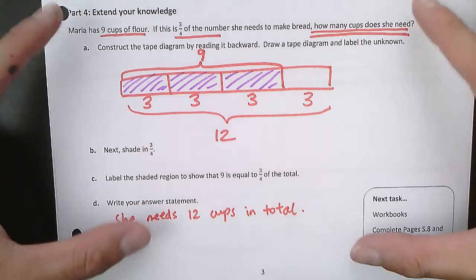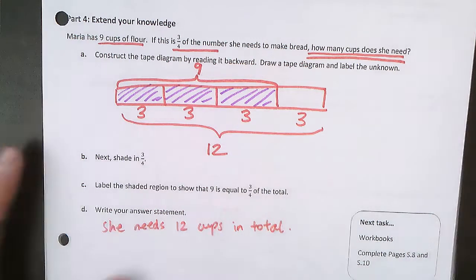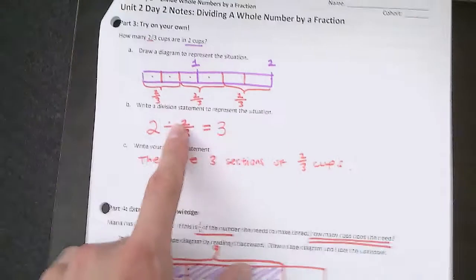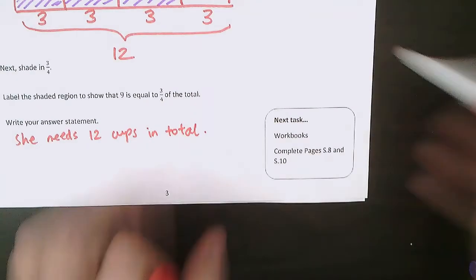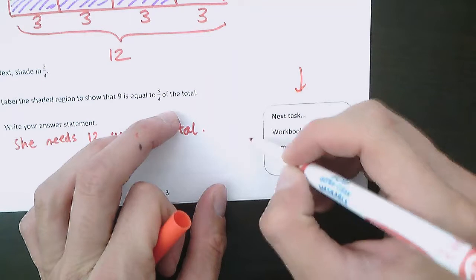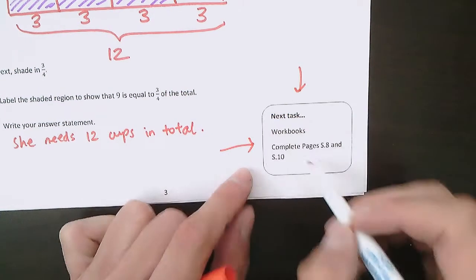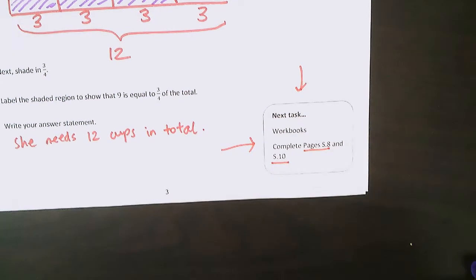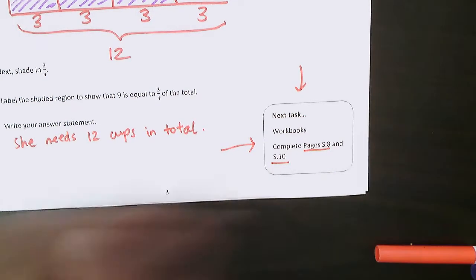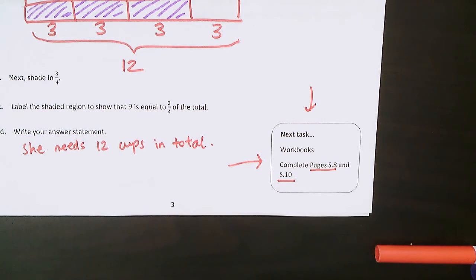If this last part was a little confusing, don't worry about it too much for now — you'll get more practice. The division part is the most important for today. After you put your computer away, get your workbook and work on pages S8 and S10. You may put your computer away and start the next task. Let's go.